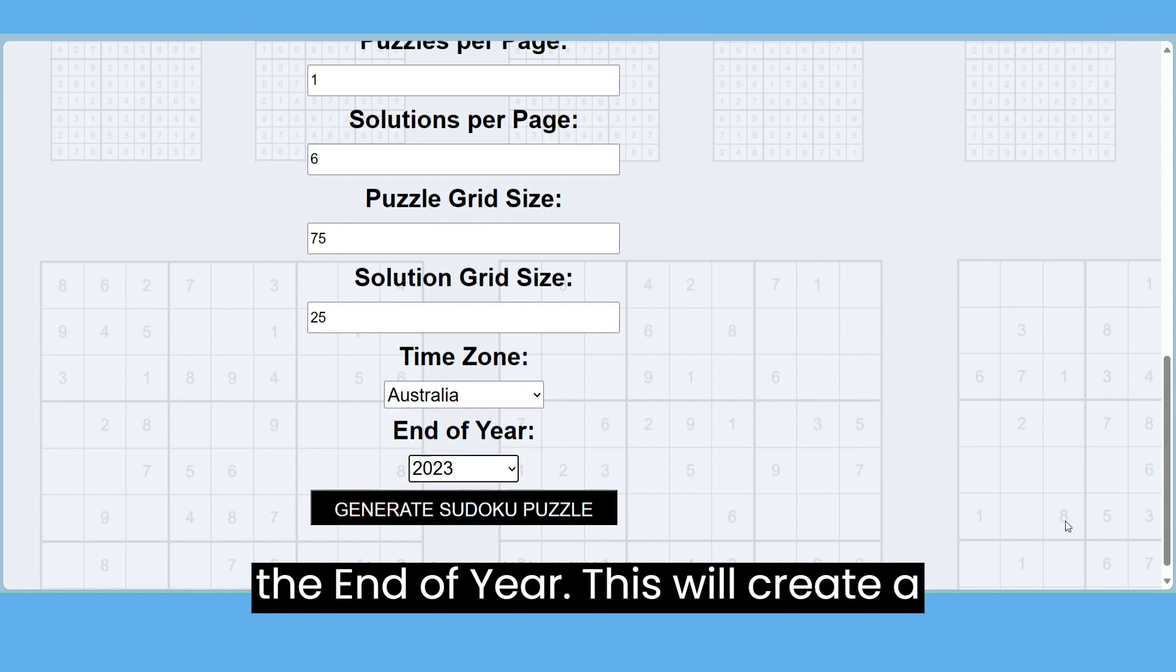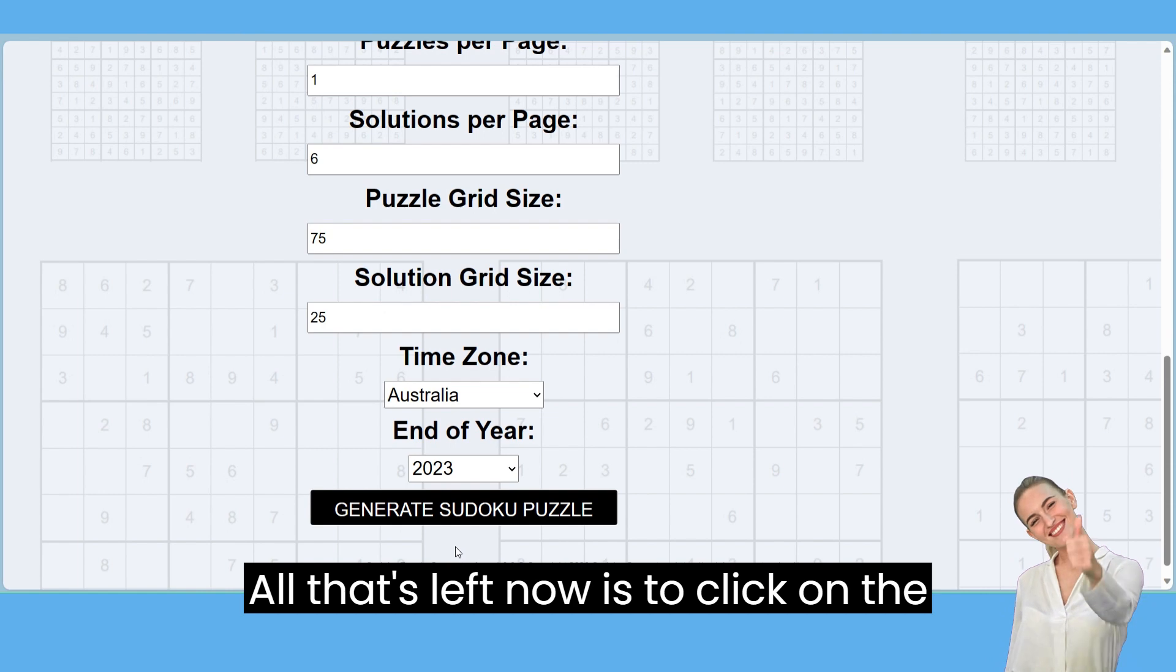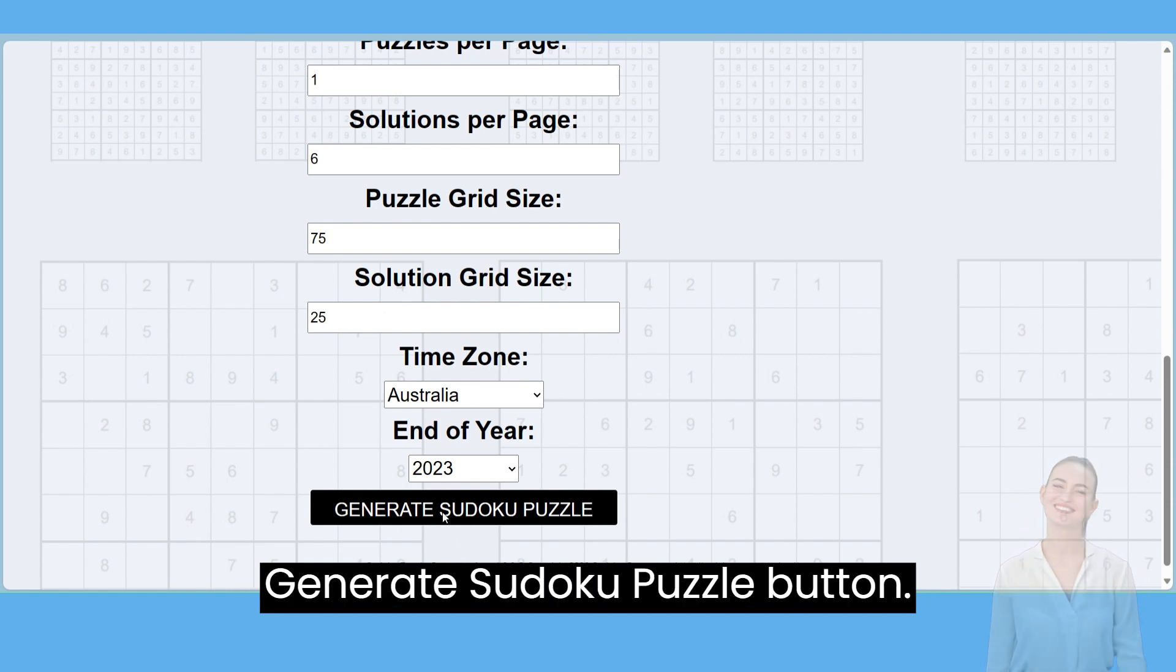This will create a calendar for 2024. All that's left now is to click on the Generate Sudoku Puzzle button.